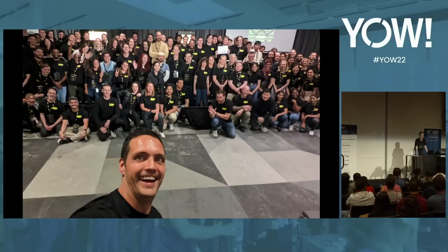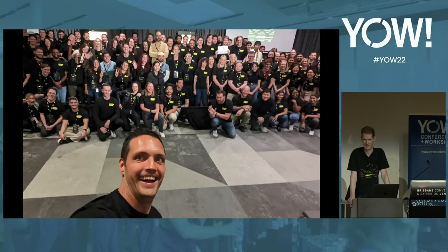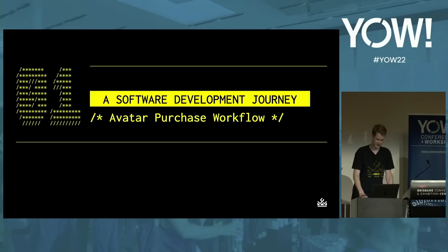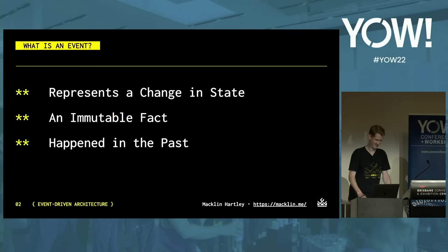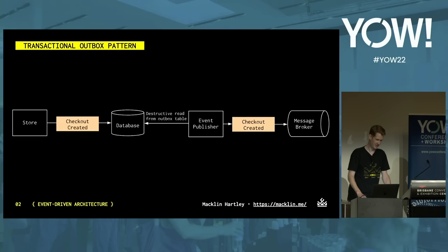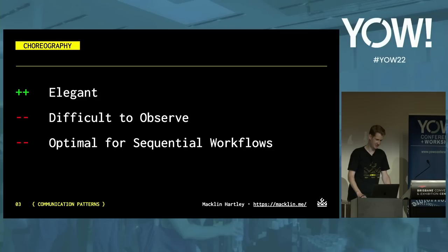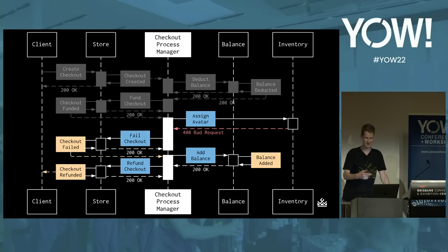When services fail, the orchestrator starts compensatory actions. What happens when those actions themselves fail? You'd probably want to retry those actions. That workflow failed because of a business rule, not because a service was down. Because we've taken this out of process, we can just keep retrying — that shouldn't be an issue. This is failing because of a business constraint: we can't give someone the same avatar twice. Maybe we ended up in this state because two requests came in at the same time.